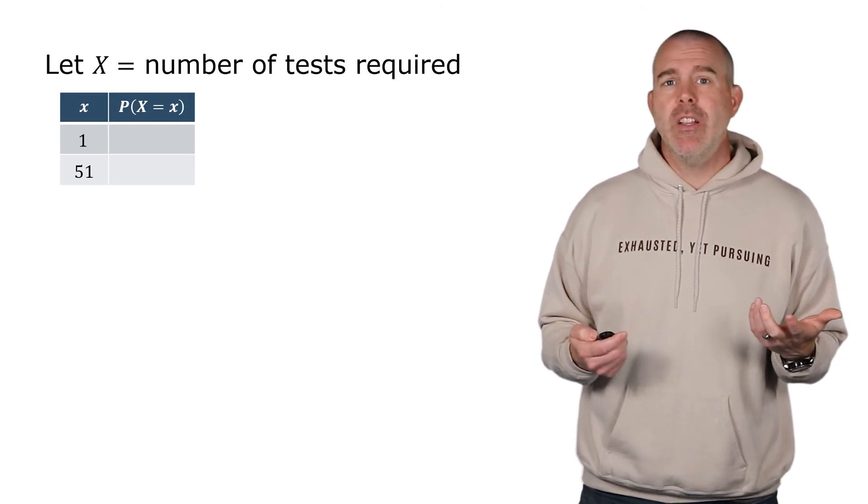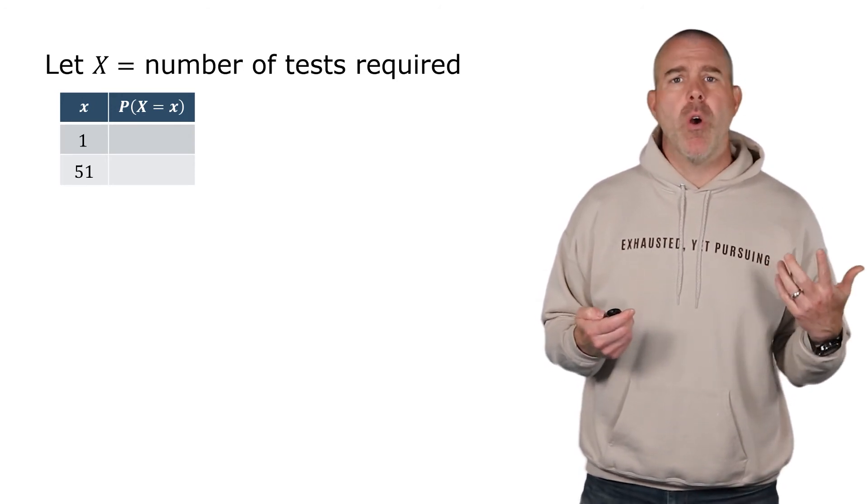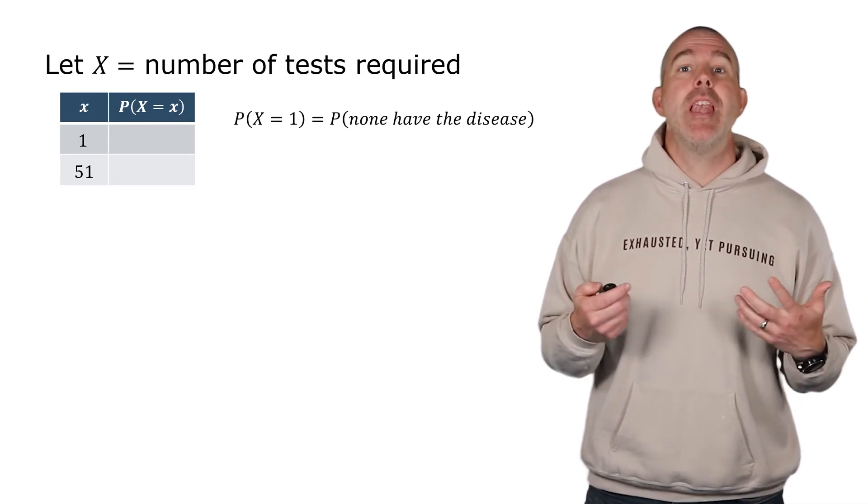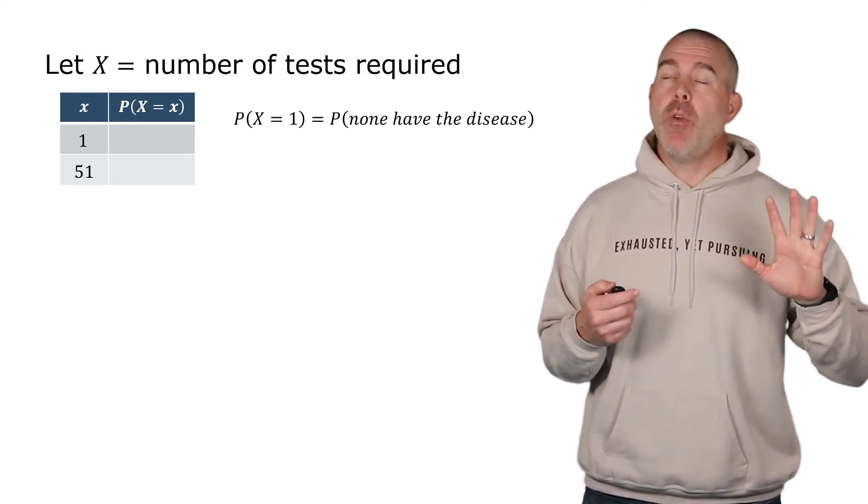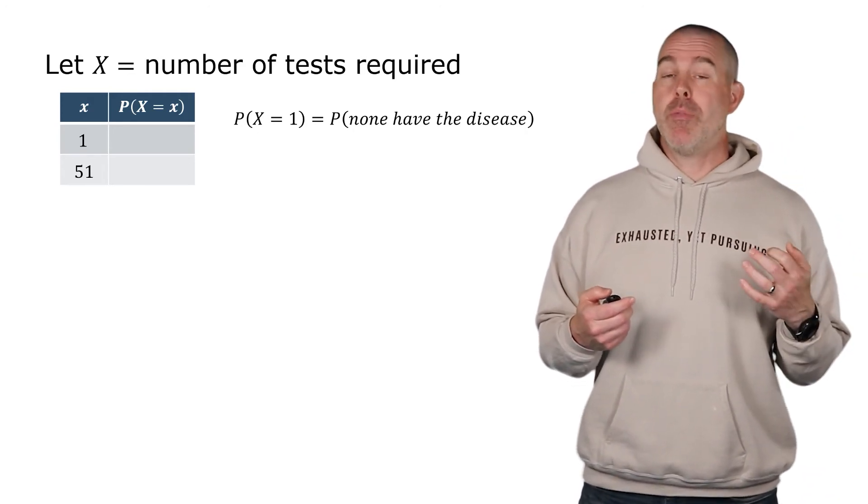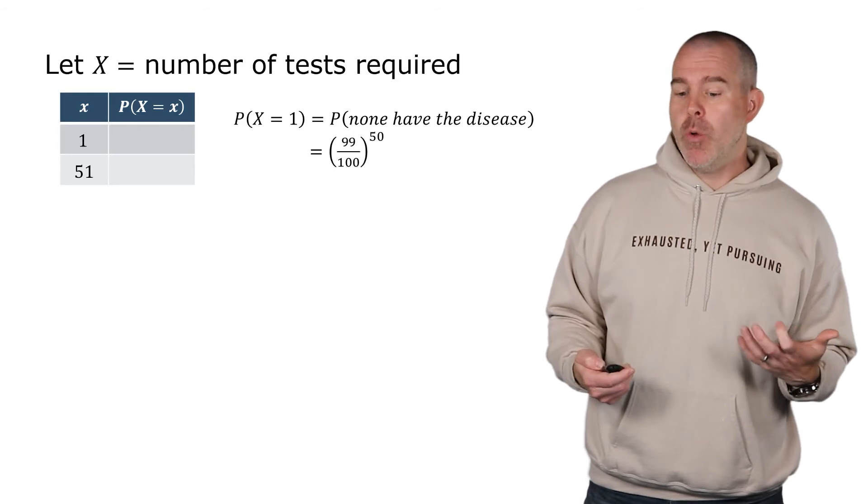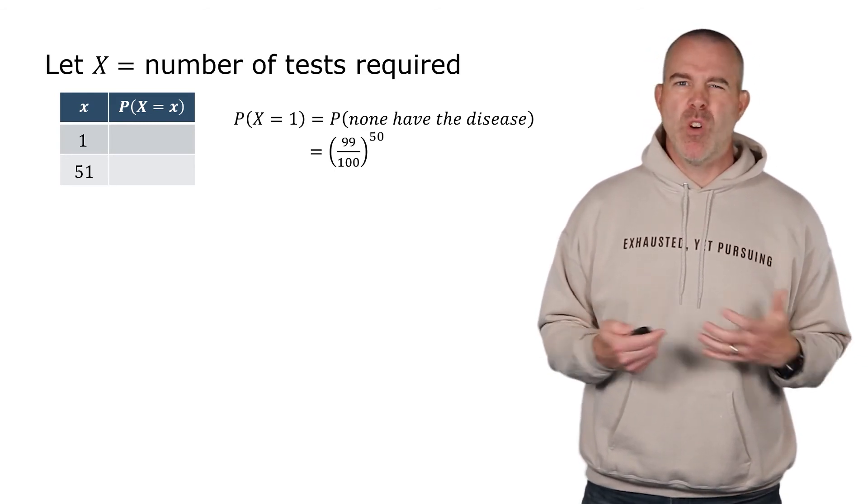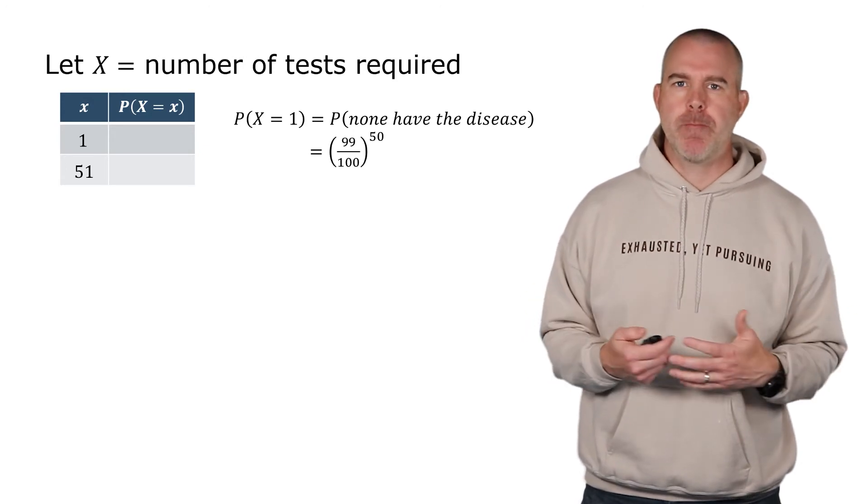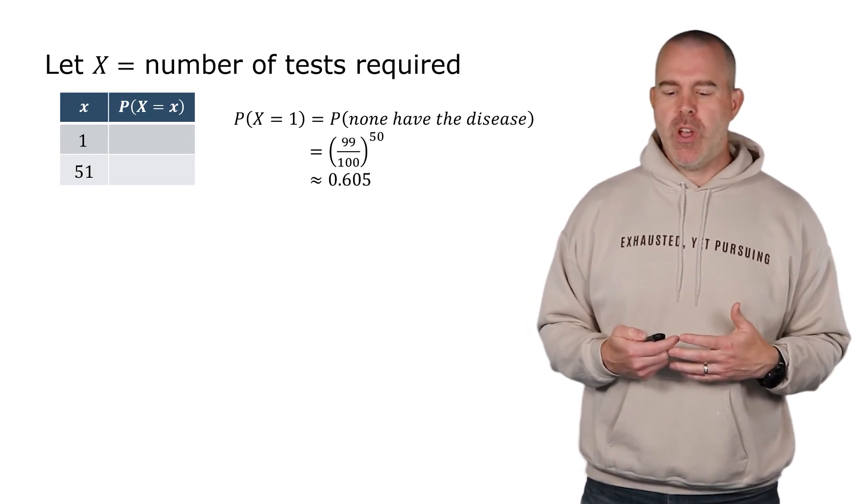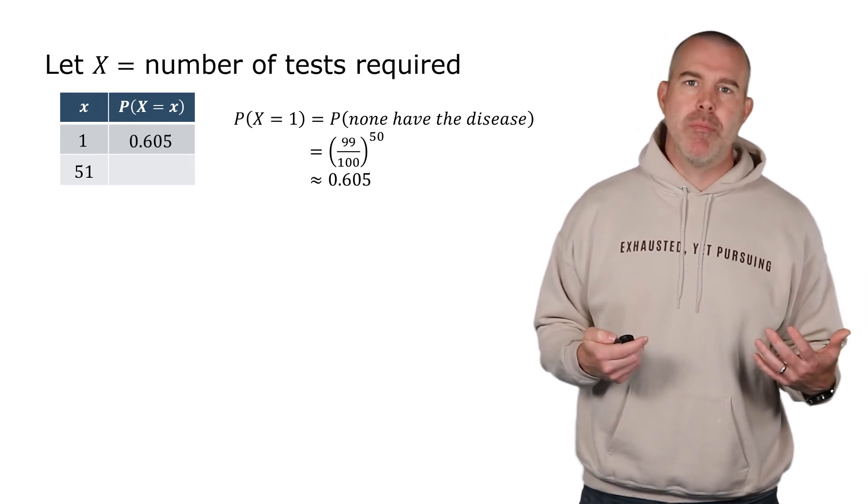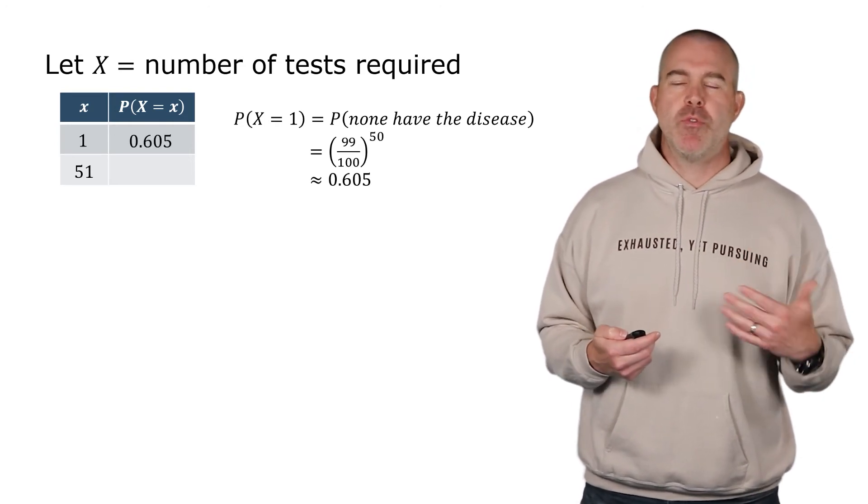Well, the probability of this, let's see, let's take a look at the one. That would be that they're all healthy. So the probability that x is one is the probability that none have the disease. If you recall, it was one out of 100 have this disease. So the probability that none have it would be 99 out of 100 to the 50th power. We're assuming all the individuals are independent. So we're assuming independence here. Okay, so that's about 0.605.